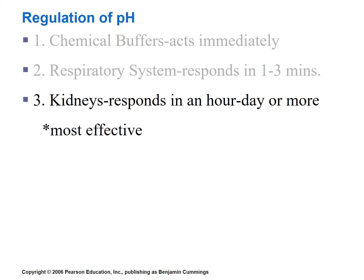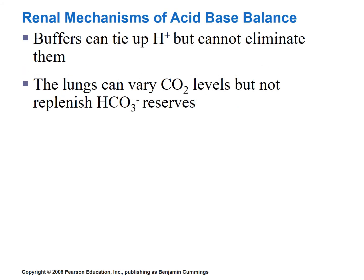We have now discussed how chemical buffers and the respiratory system can regulate pH. Let us now turn our attention to the kidneys, which are the most powerful regulators of pH in the human body. The lungs can tie up hydrogen ions but cannot eliminate them. The lungs can vary carbon dioxide levels, but there are limits to how high or low carbon dioxide levels can be changed, and they cannot replenish bicarbonate reserves, which are vital to the effectiveness of the bicarbonate buffering system.